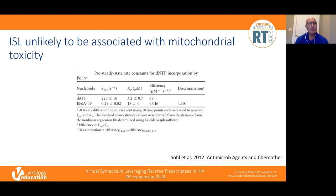Islatravir is unlikely to be associated with mitochondrial toxicity. A paper published by Sol et al. in 2012 showed that EFDA triphosphate has very low affinity for the gamma polymerase associated with mitochondrial toxicity, compared to the natural substrate which is readily incorporated into mitochondrial DNA. So it's believed that the likelihood that EFDA or Islatravir will cause mitochondrial toxicity is very low.